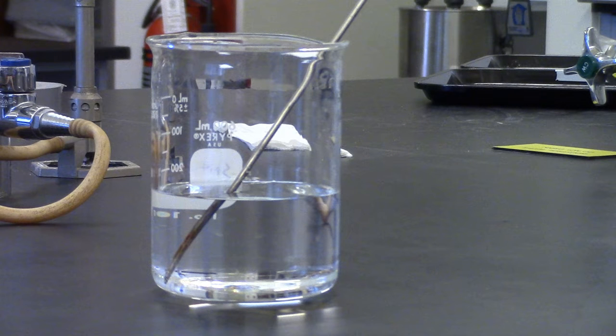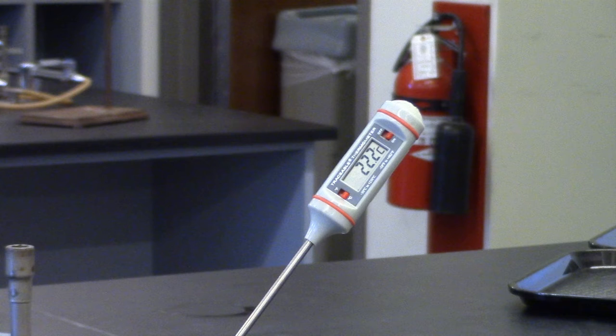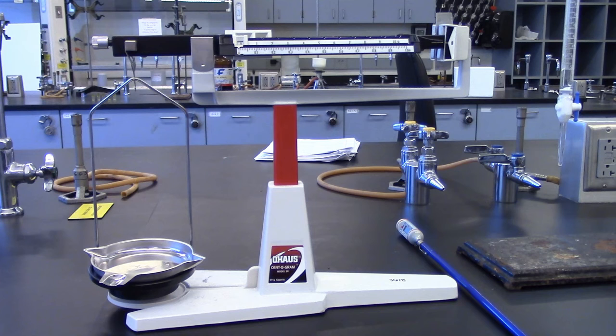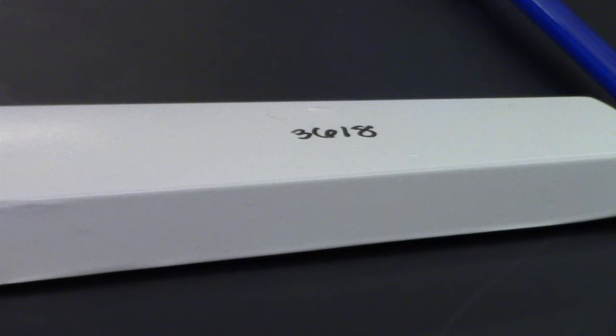Fill your 600 milliliter beaker with about 250 to 300 milliliters of distilled water and measure the temperature of the water. Obtain a quadruple beam balance and record the number.